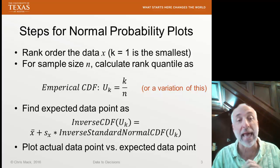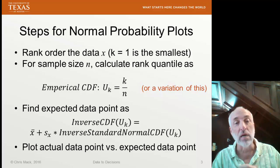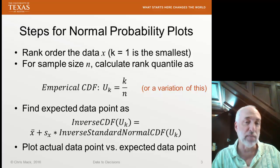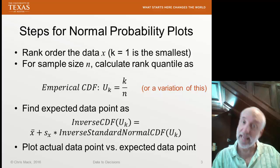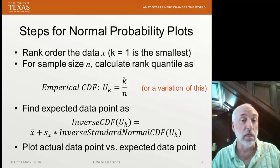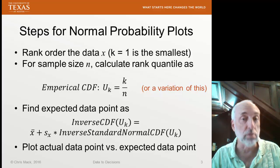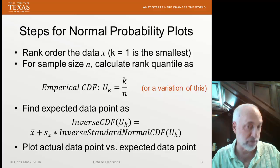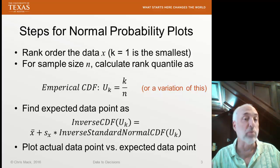So I need to expand it by multiplying by the standard deviation of the data set, shift it by adding the mean of the data set. And that becomes my expected data point. I've got an actual data point. Now I have a calculated or expected data point, assuming a normal distribution is an accurate description of the PDF of these data points. And I'll plot actual data versus expected data.